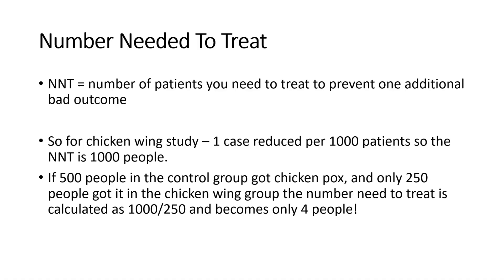One other term that combines the two is something called the Number Needed to Treat, or NNT. If one in a million people get something, it's really hard to reduce the risk. Whereas if something is really common, sometimes a smaller intervention can have a bigger effect. You figure that out using a combination of the absolute risk and the number who have it. For Paul's chicken wing example: 1,000 people were in the study, 2 in the control group got chicken pox, 1 in the treatment group got it — so one person less per thousand. The number needed to treat to reduce one case of chicken pox is actually 1,000.